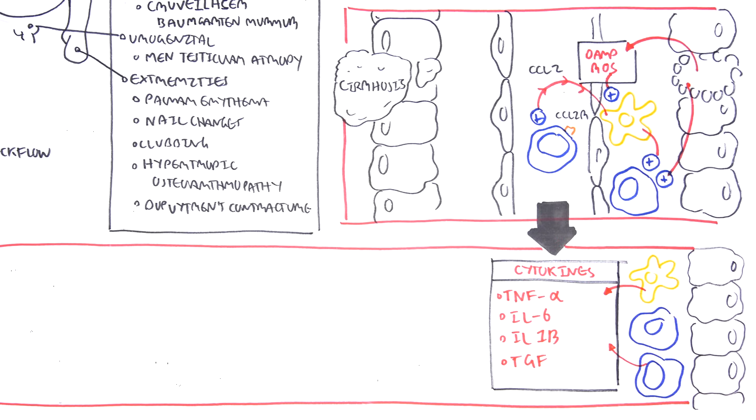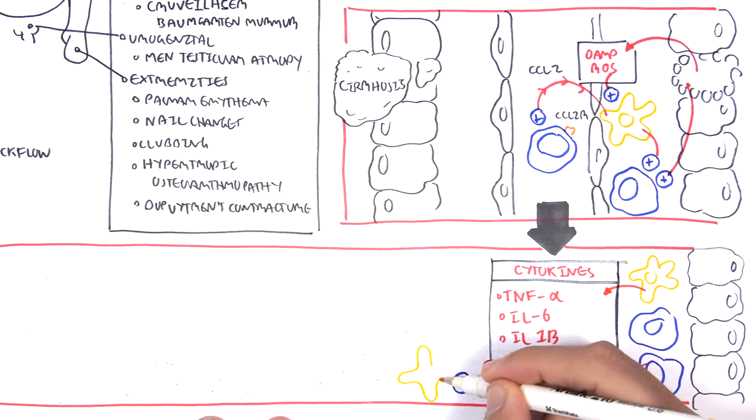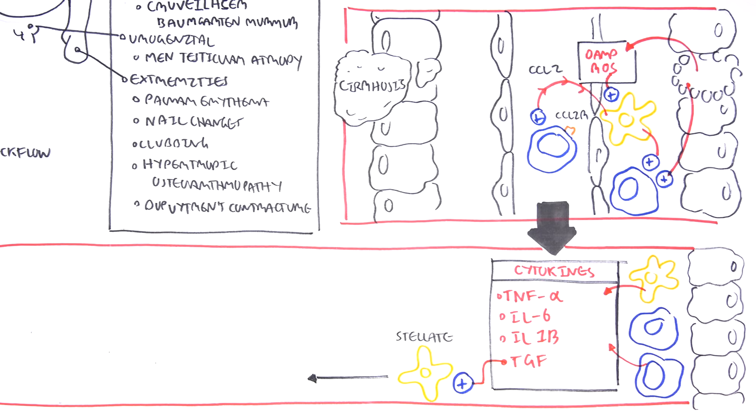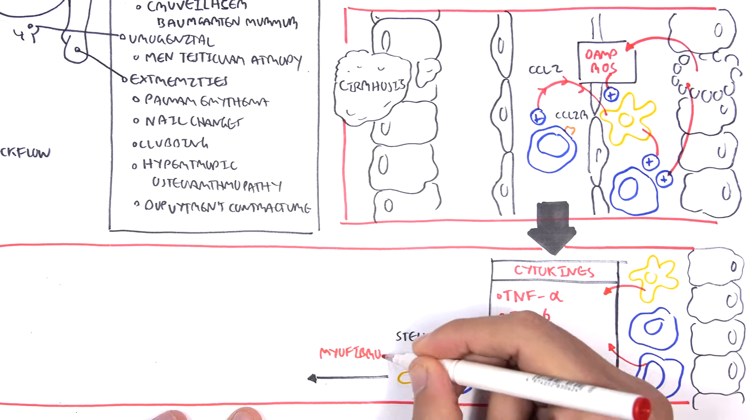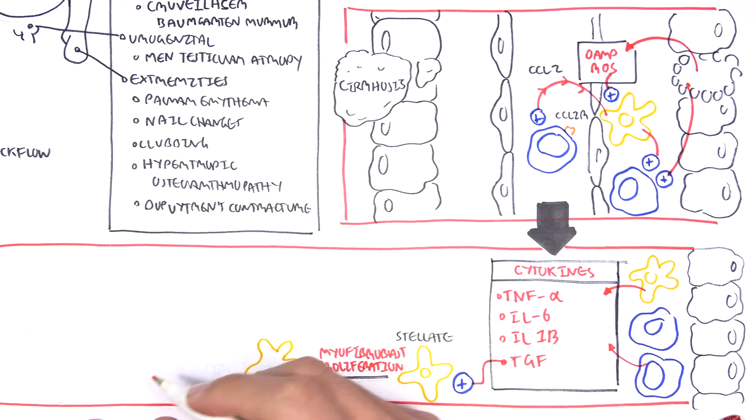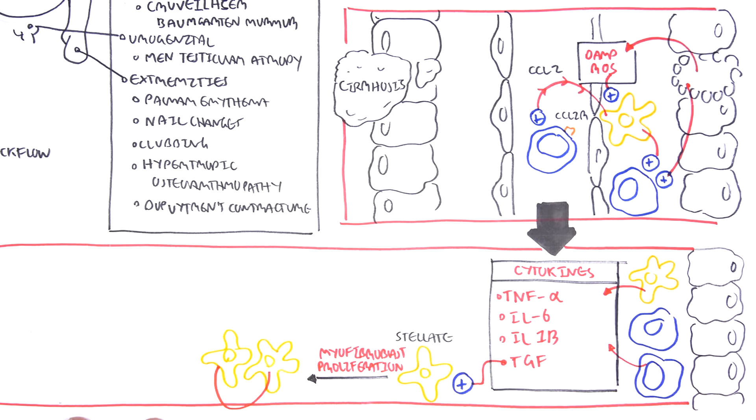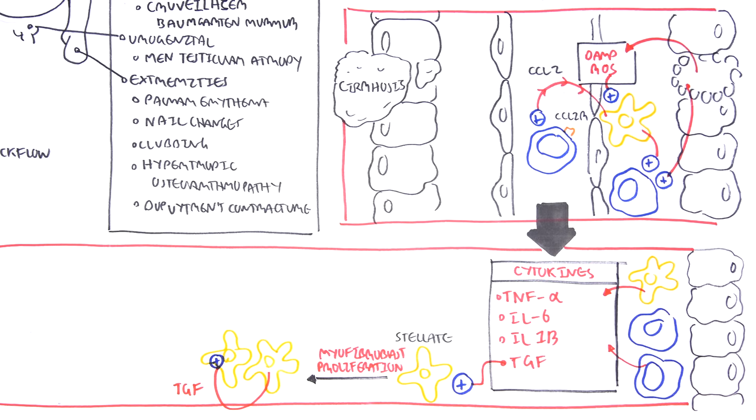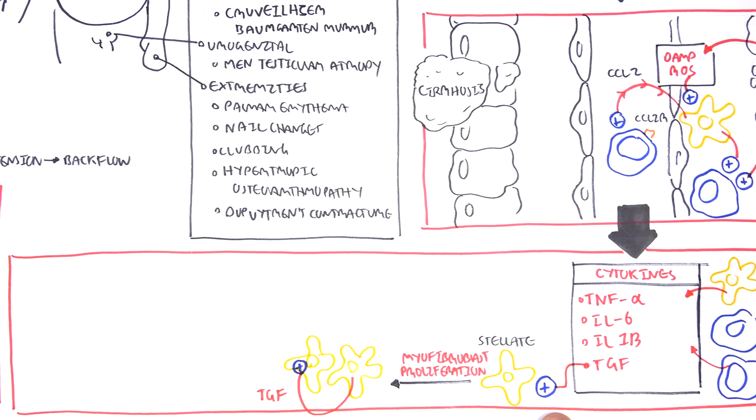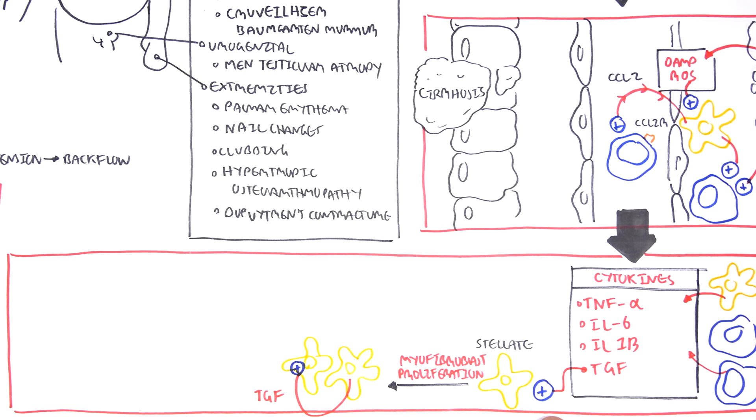Let's focus on TGF now. TGF stands for transforming growth factor. TGF is released primarily by stellate cells. When it's released, it further stimulates other stellate cells to transform into cells known as myofibroblasts. It causes myofibroblast proliferation. These myofibroblasts further release transforming growth factor, which stimulates stellate cells to proliferate and become more myofibroblasts.